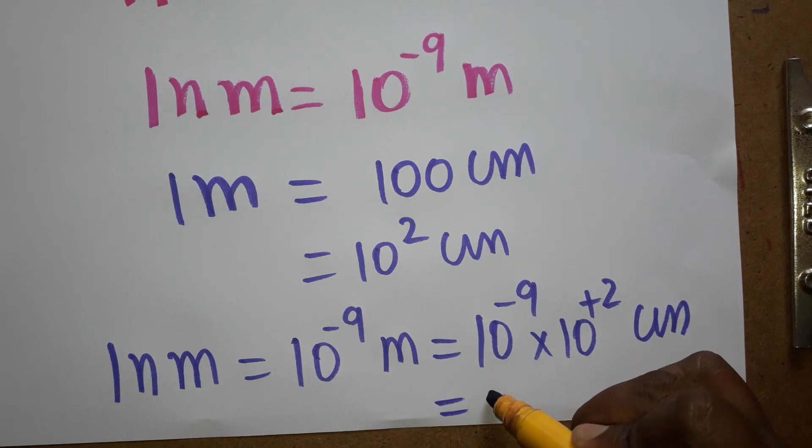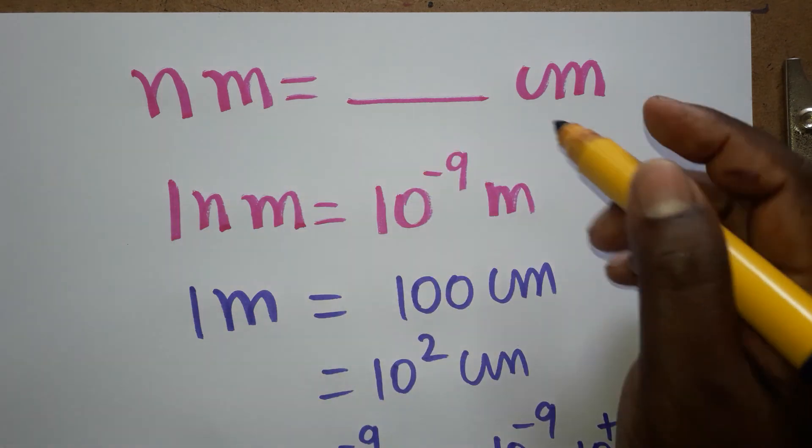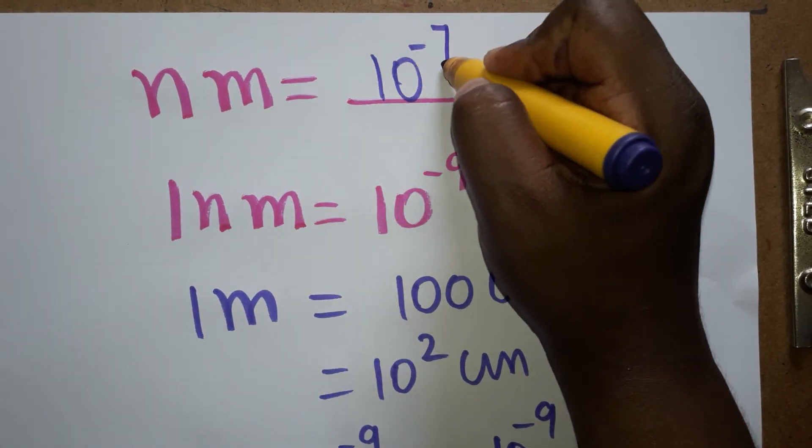So it is 10 power minus 7 centimeter. Therefore, one nanometer is 10 power minus 7 centimeter.